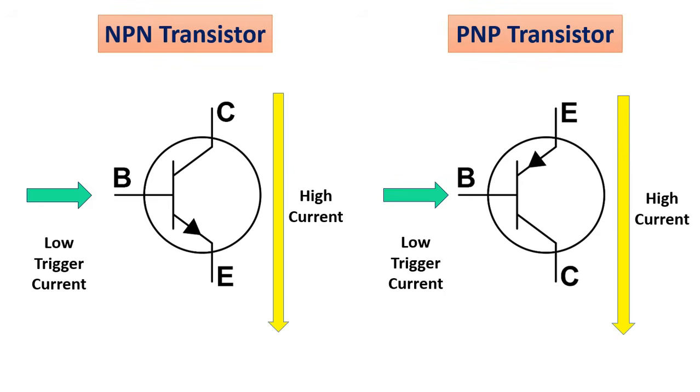NPN transistors allow electricity to pass from the collector pin to the emitter pin. They are represented in a schematic with a line for a base, a diagonal line connecting to the base, and a diagonal arrow pointing away from the base.